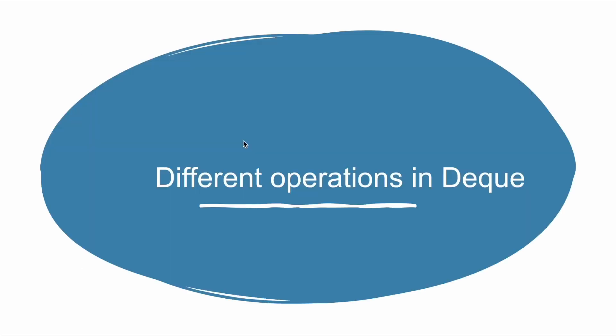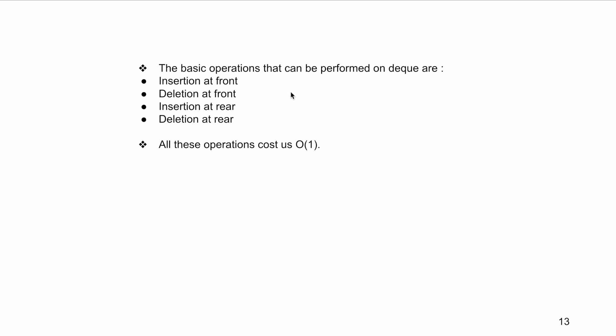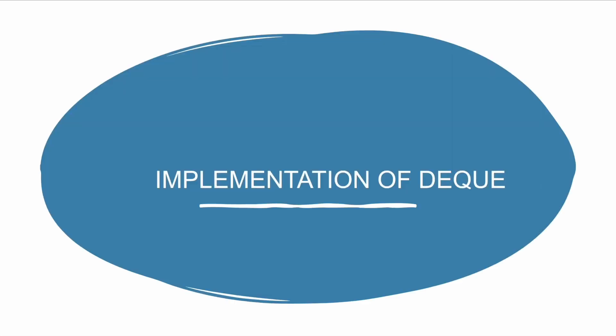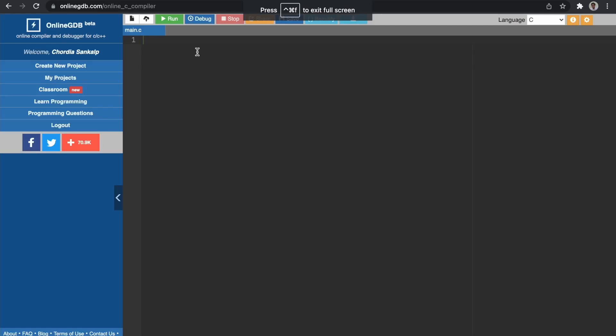Moving on to the different operations in DQ. The basic operations that can be performed on a DQ are insertion at front, deletion at front, insertion at rear, and deletion at rear. All these operations cost us O(1), which is the most optimal time complexity we can expect for this implementation. I'll be using an online C compiler — you can use whichever IDE you are comfortable with.